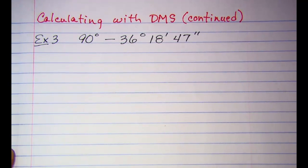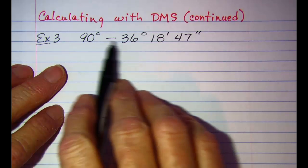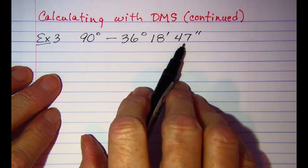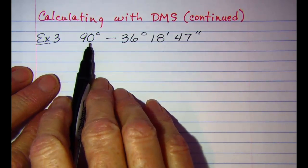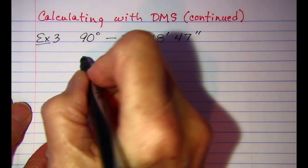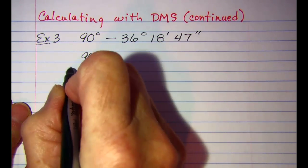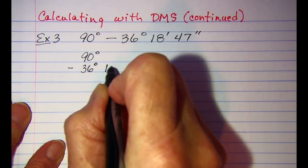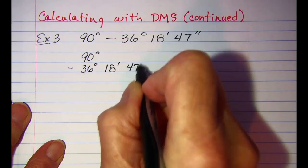Let's do one more example. I'm going to subtract 36 degrees 18 minutes 47 seconds from 90 degrees. Let me rewrite this vertically: 90 degrees minus 36 degrees 18 minutes 47 seconds.